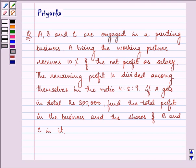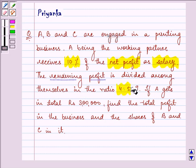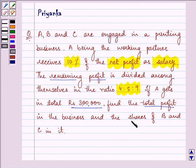Hi and how are you all today? The question says, A, B and C are engaged in a printing business. A being the working partner receives 10% of the net profit as salary. The remaining profit is divided among themselves in the ratio 4 is to 5 is to 9. If A gets in total rupees 3 lakh, find the total profit in the business and the shares of B and C in it.